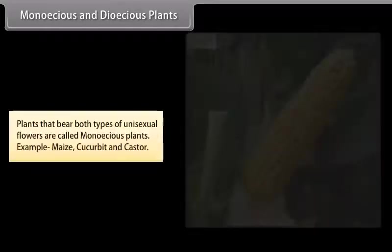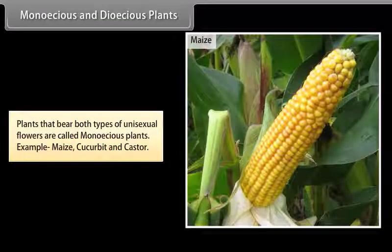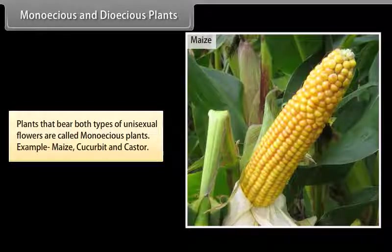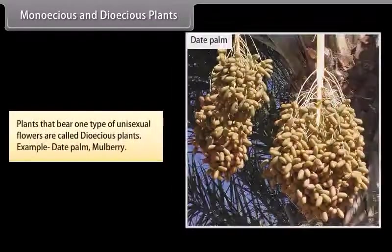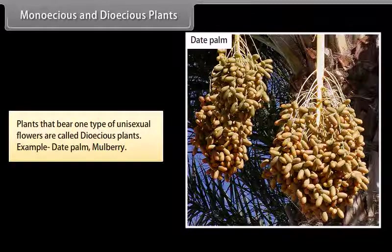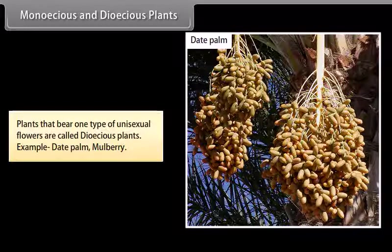Neuter flowers: plants in which flowers lack both stamen and pistil are known as neuter. Examples include mango and cashew. Plants that bear both types of unisexual flowers are called monoecious plants — examples include maize, cucurbit, and castor. Plants that bear one type of unisexual flowers are called dioecious plants — examples include date palm and mulberry.